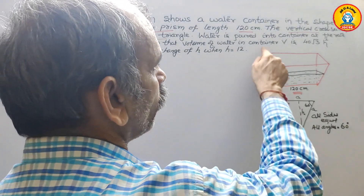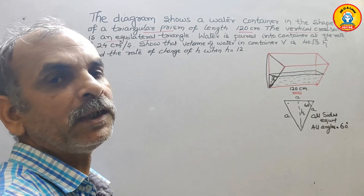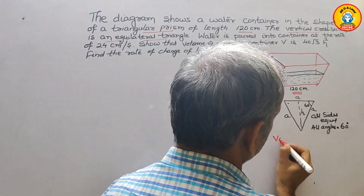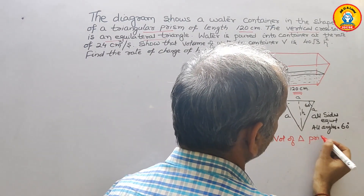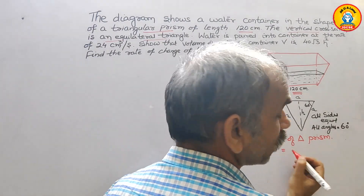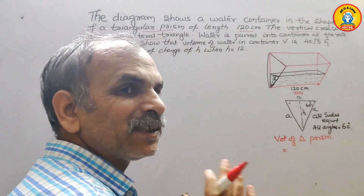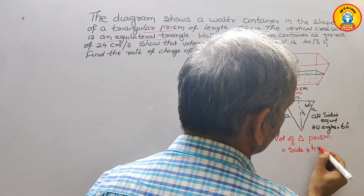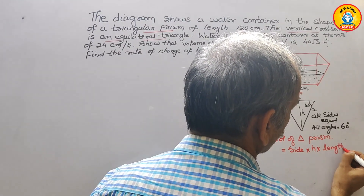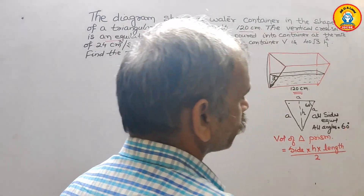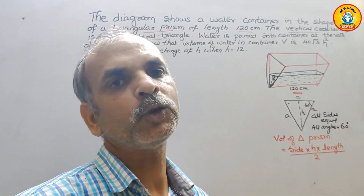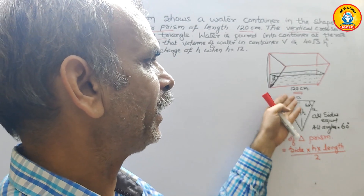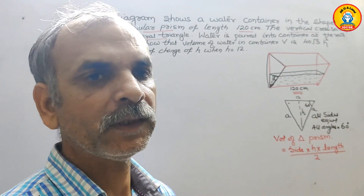Now we have to find the volume, which should equal 40√3 h². We write the formula for the volume of a triangular prism: volume = side × h × length. Here we label all sides of the equilateral triangle as A — so the sides are A, A, and A.